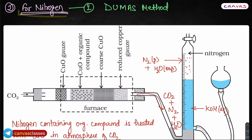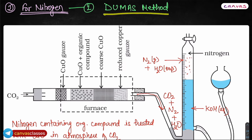So when we are doing quantitative analysis — quantitative means if we want to check if there is any element present, like Nitrogen present, then it is in what amount, or sulfur, or phosphorus — that is called quantitative analysis. So for Nitrogen, there are two very important methods: one is the Dumas method and one is Kjeldahl's method.